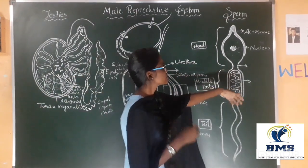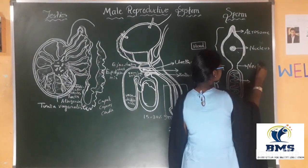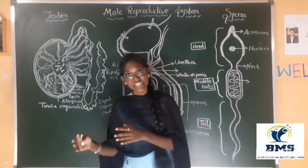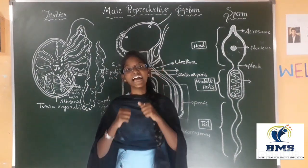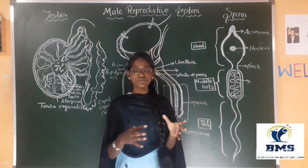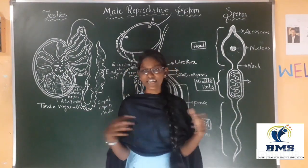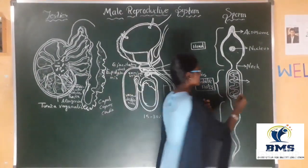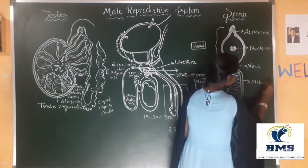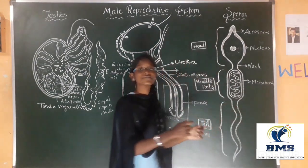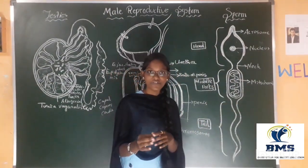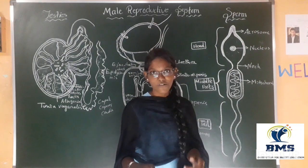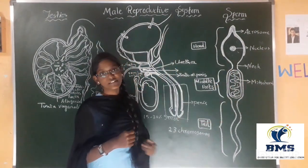It also has mitochondria in its middle part. These mitochondria are very useful for the sperm because of mobility. Whatever we do, we need energy — like that, this sperm also gets energy from its mitochondria. The mitochondria will provide the energy for the sperm to move. The tail is also helpful for the sperm to move forward. This is about the structure of the sperm.